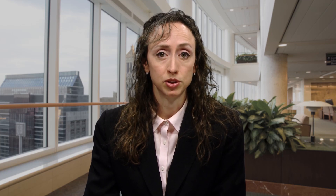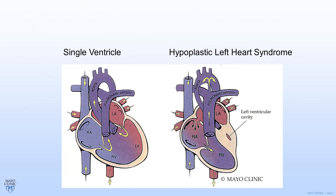Single ventricle is a term to describe patients with only one functional ventricle as opposed to two. In this diagram, on the left is a heart where there's a missing wall in between the two ventricles, so the heart functionally acts as if there's one ventricle. Here, I've drawn in where the wall would normally be. On the right is a heart with hypoplastic left heart syndrome, in which the left ventricle is severely underdeveloped, so again the heart acts as if there's only one ventricle.